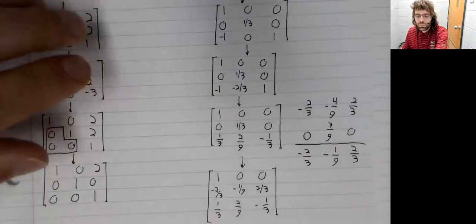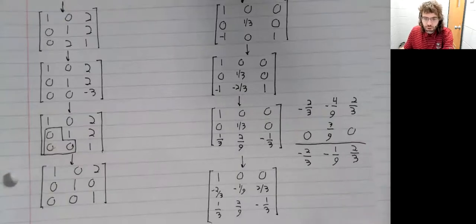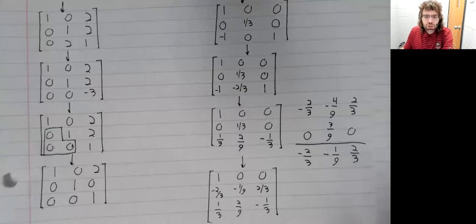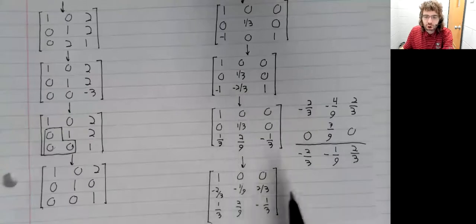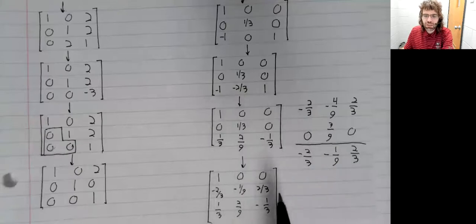So, because of this, the backward phase of the Gauss Jordan elimination, which is usually much quicker than the forward phase, is going to be extremely slow because you don't have all of those zeroes over here hurrying things along.